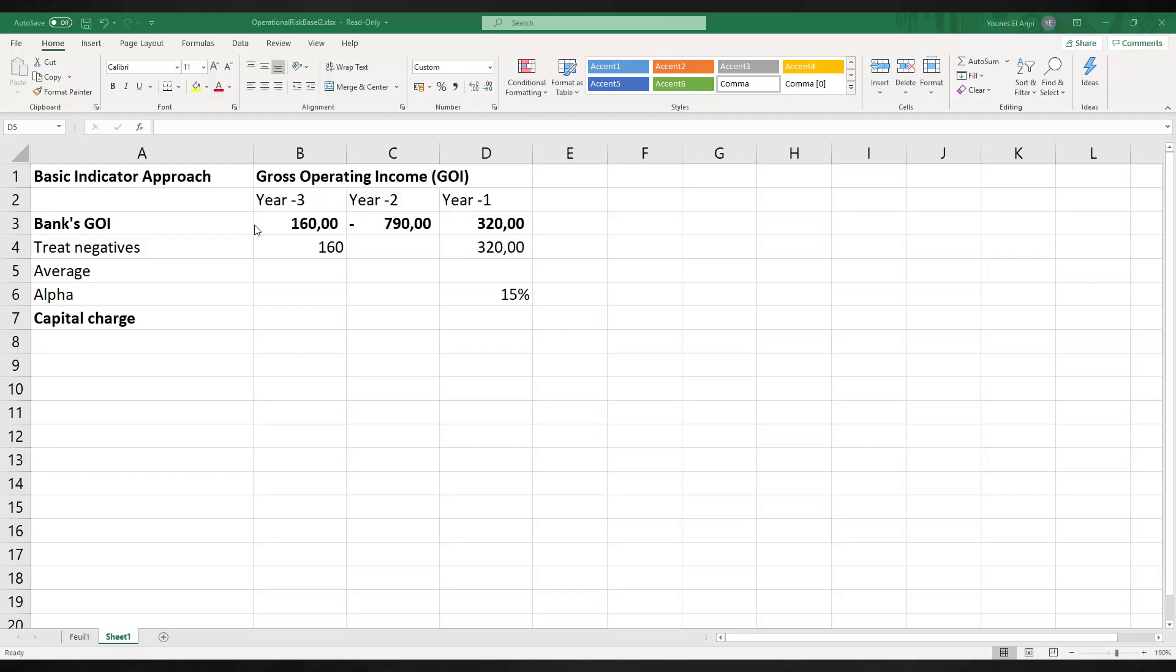Let's turn to an Excel example to get a better understanding. We have the gross income numbers for this financial institution for three years: 160, minus 790, and 320. Since there is a loss for the second year, this number is excluded from the calculation.